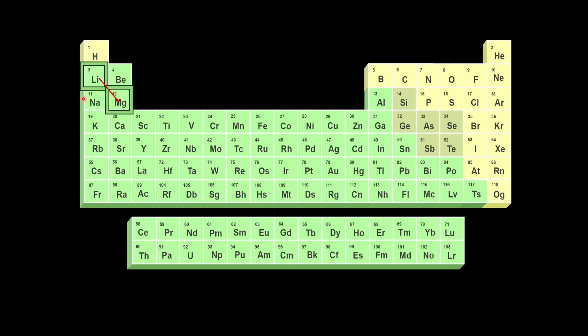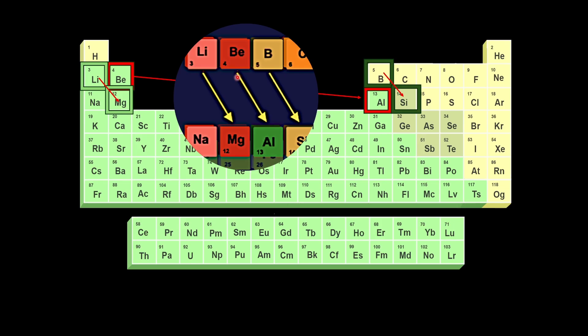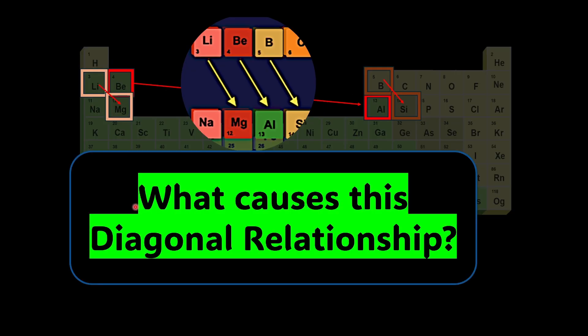In the previous video, we saw how lithium was very similar to magnesium, beryllium was very similar to aluminium, and boron was similar to silicon. We understood that there was an anomalous behavior in second period elements, and now it is time to understand what causes this diagonal relationship and what is the consequence of this diagonal relationship. So in this video, let's dive deep into what causes this diagonal relationship.